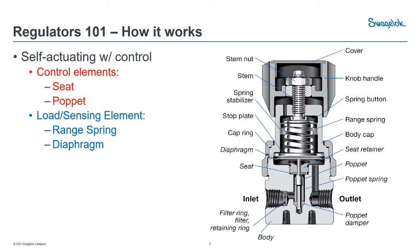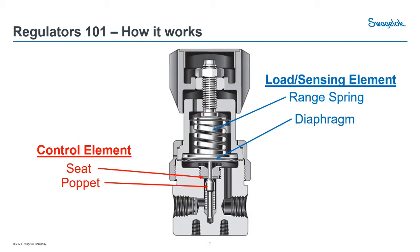How exactly does a regulator work? This is a self-actuating with control device, and if you see on the right there are a bunch of different moving parts that make these look pretty complicated. But today we're going to focus on the four control elements that mainly work for the regulator function. We have our two control elements — the seat and poppet, located on the lower half of the regulator — and on the loading and sensing element side, we'll focus on the range spring and the diaphragm.